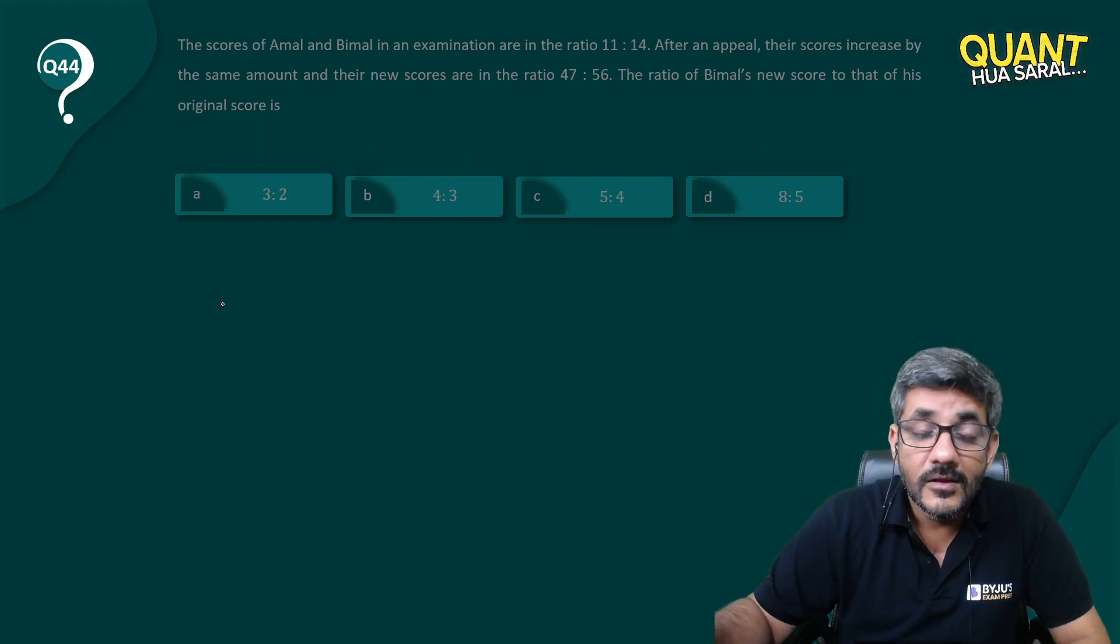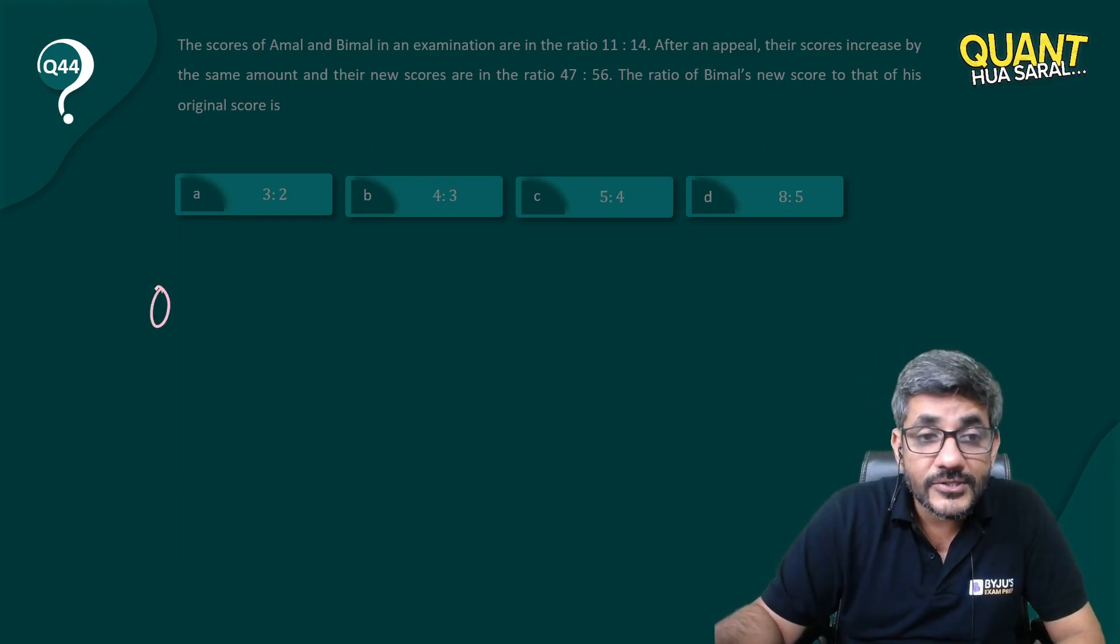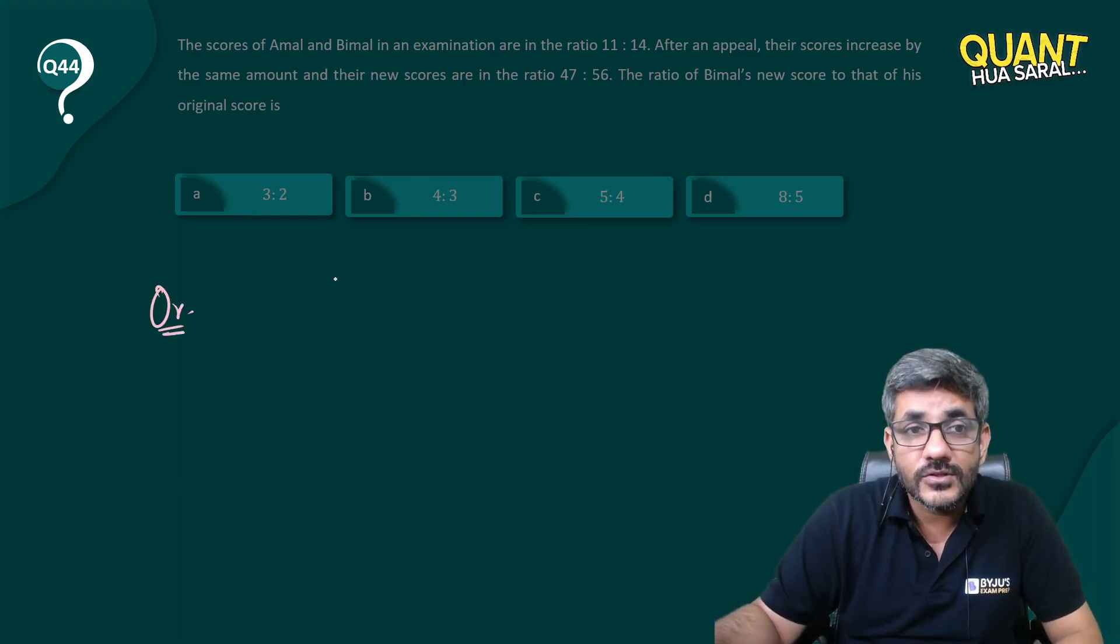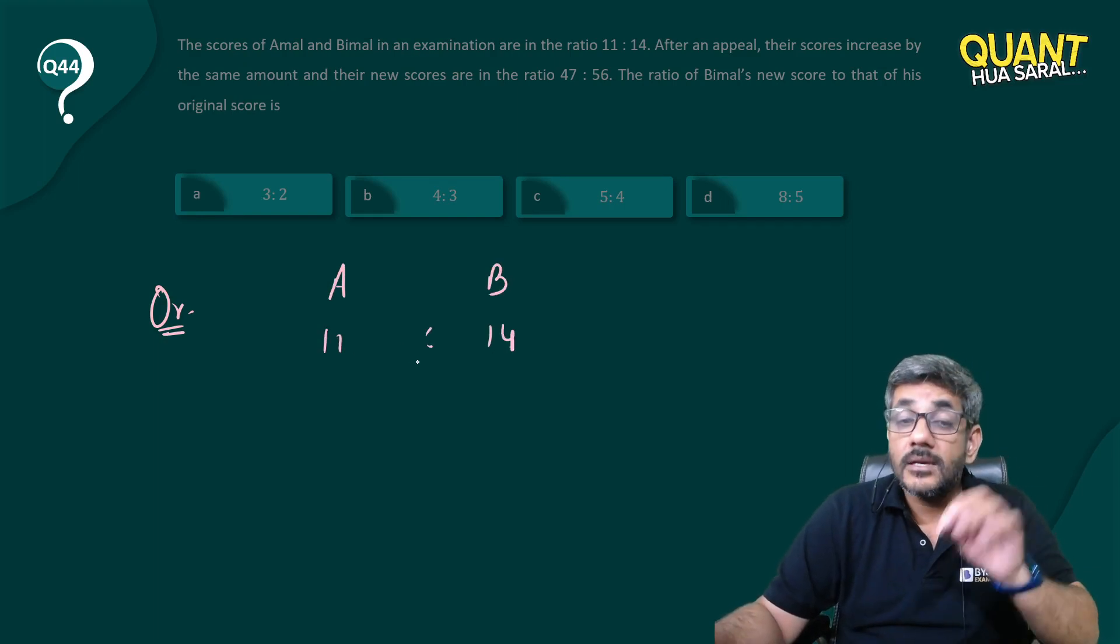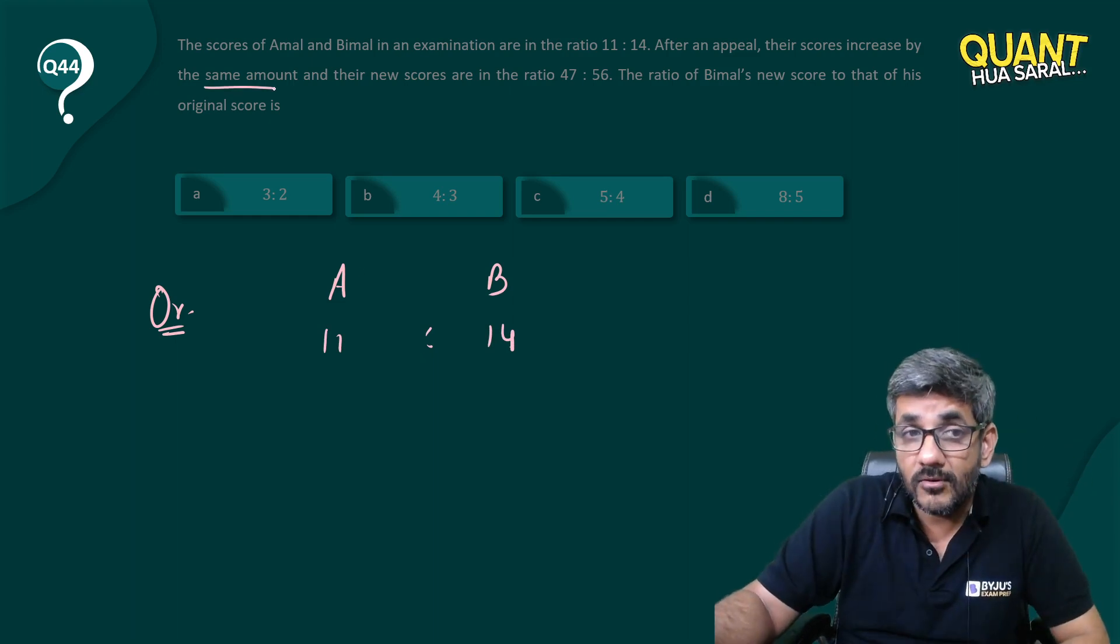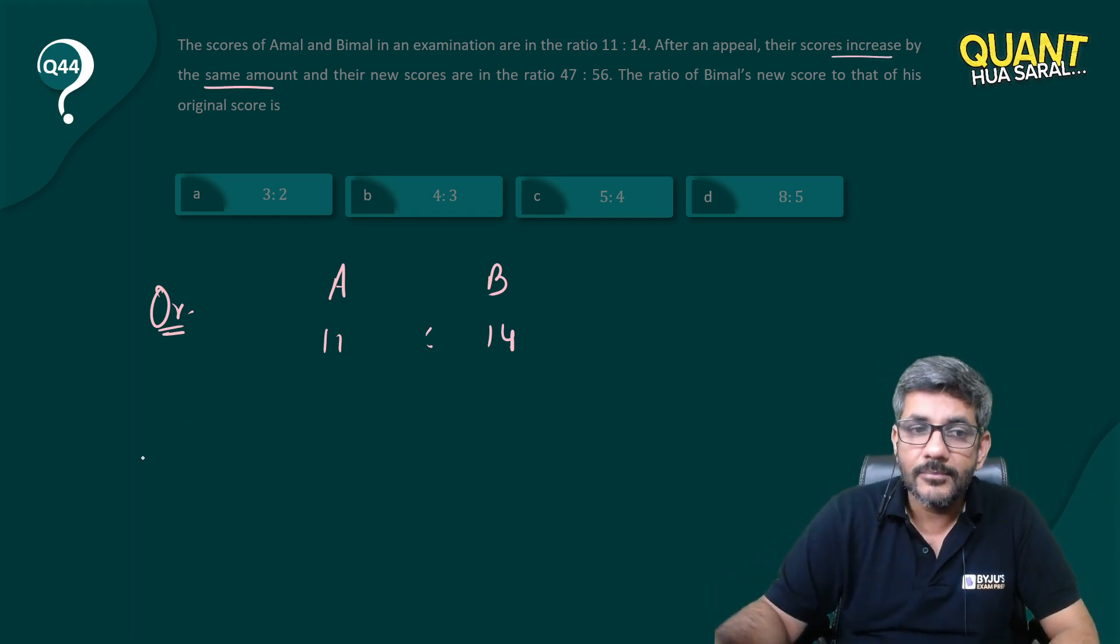The ratio of Bimal's new score to that of his original score. So the ratio of the original scores of Amal and Bimal is 11 is to 14. They both increase by the same amount. This is important, they both increase by the same amount and now the ratio is 47 is to 56.